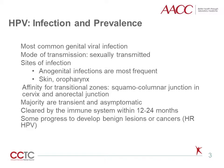Human papillomavirus is the most common genital viral infection and is transmitted sexually. Infections of the anogenital region are the most frequent, with skin and oropharynx being some of the other sites involved. At these sites, the virus demonstrates an affinity for transitional zone mucosa such as the squamous columnar junction of the cervix and anorectal junction.